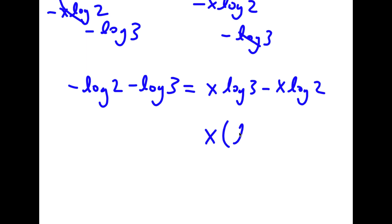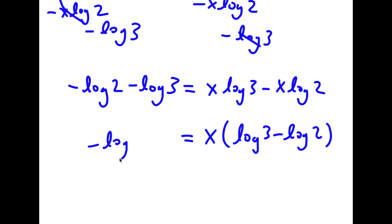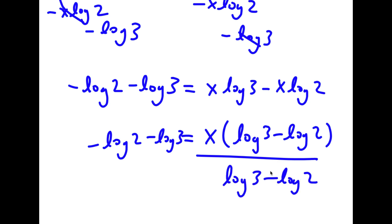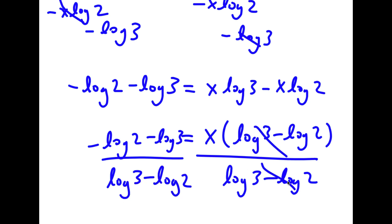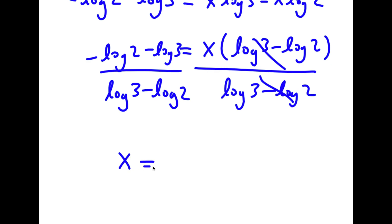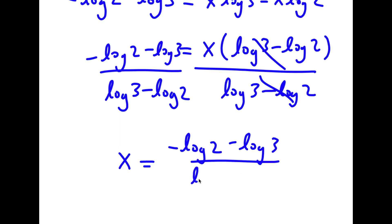Now if I factor out x from here, I get x times log 3 minus log 2 is equal to negative log 2 minus log 3. So if I divide both sides by log 3 minus log 2, I have x is equal to negative log 2 minus log 3 over log 3 minus log 2.